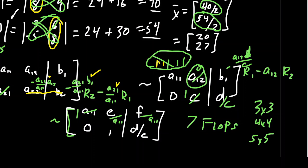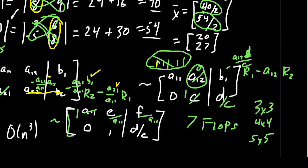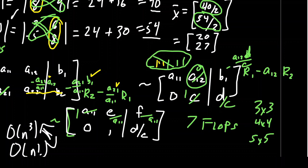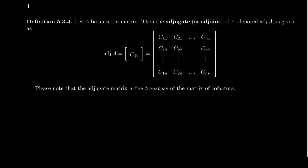However, when you move to 3×3, 4×4, and 5×5 matrices, the difference grows enormously. Row reduction has complexity on the order of n³ — a polynomial algorithm — whereas Cramer's Rule grows factorially. Even for small n, the difference becomes huge. So Cramer's Rule is not recommended for solving large systems. The homework will ask you to do some of these to convince you of how horrible it gets — pack a sandwich before you start.